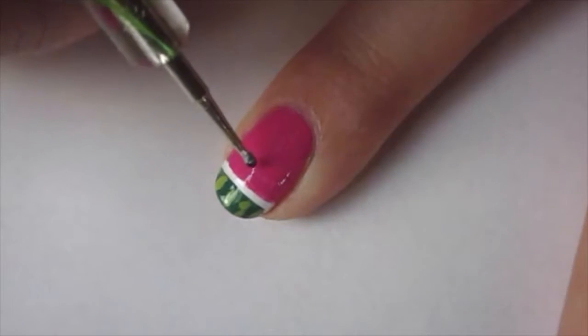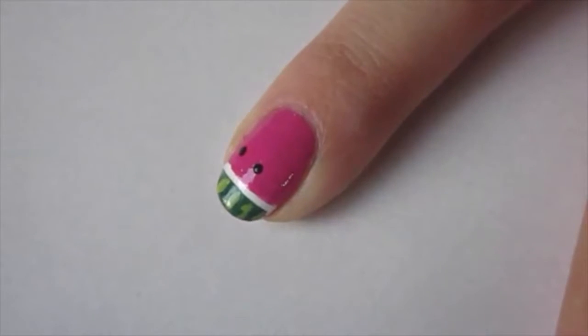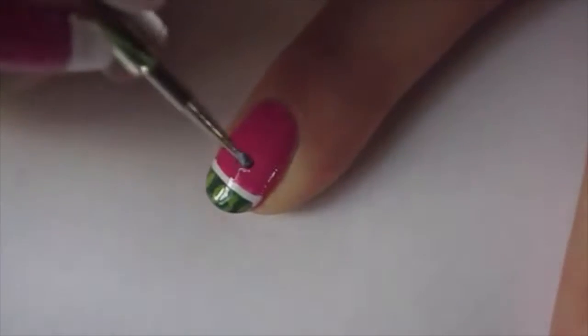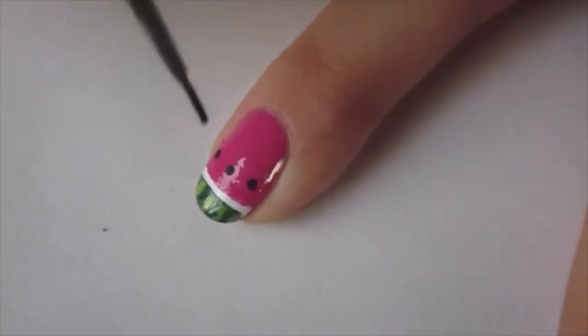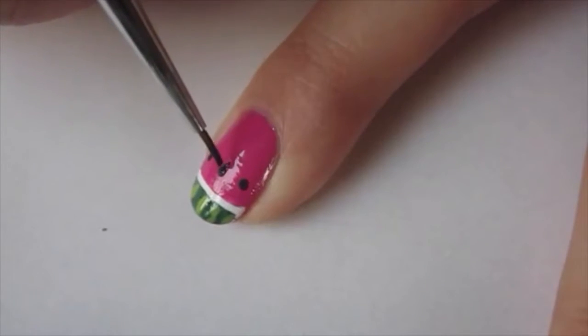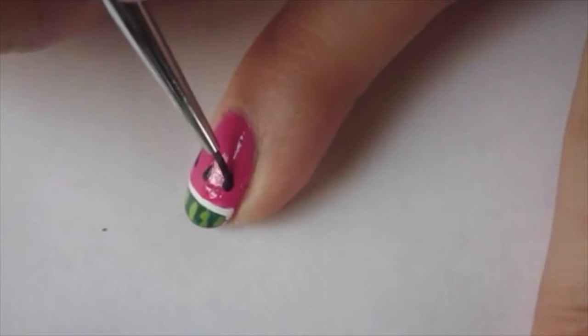Then I went in with a black polish and a dotting tool just to create some seeds. Next, I extended those seeds just to make them look a little more teardrop shaped.